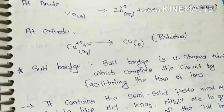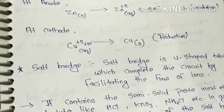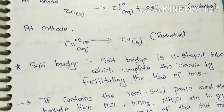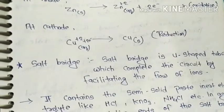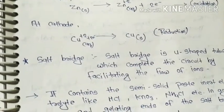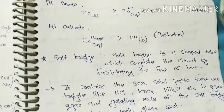In the cathode, there is a reduction process in which Cu²⁺ will accept the electron and convert into copper. Here you can see the two reactions.